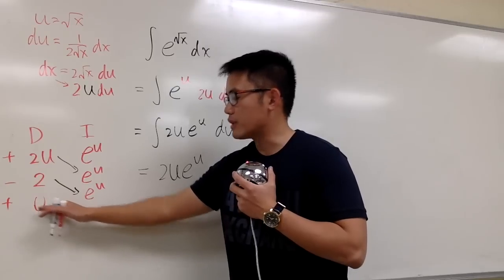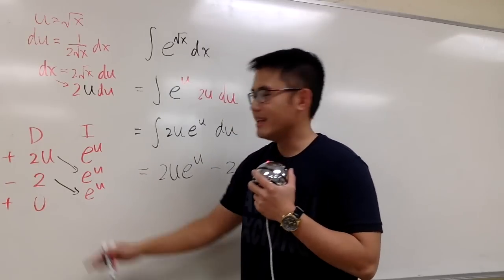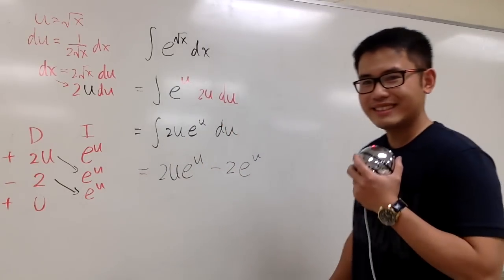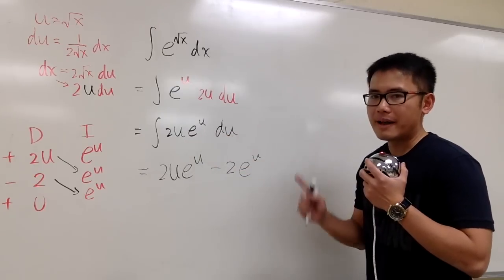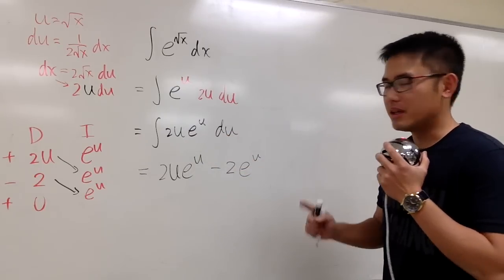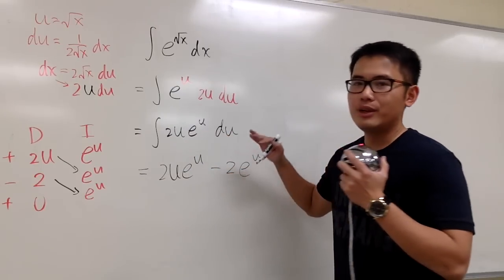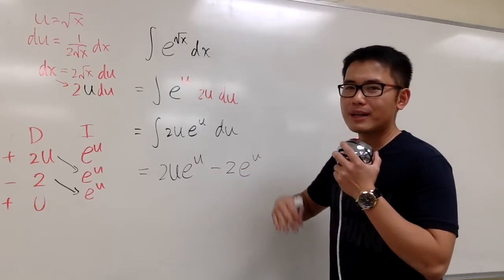Because, you know, if you do 0 times the next one, you just get 0. And then this is just 0. So, we are done with the integration part from here to here. But then we are not done with the question yet. Because this is still in the u world. We have to go back to the x world now.